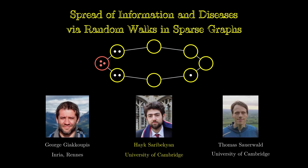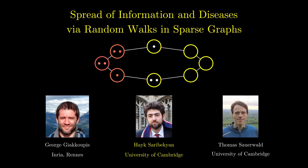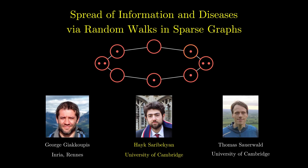Information dissemination is a central topic in distributed computing and has been studied since the 1980s. We study a protocol that uses moving agents to disseminate information in a graph. In particular, we focus on the broadcast time of the protocol in some general classes of sparse graphs and also in balanced trees and grid graphs.